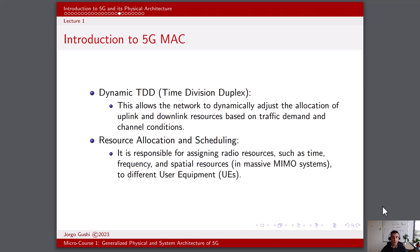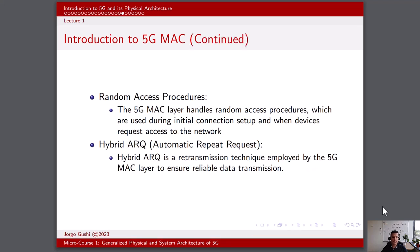5G MAC also works on resource allocation and scheduling, assigning radio resources such as time, frequency, and spatial resources in massive MIMO systems to different user equipments or UEs. The 5G MAC layer is also responsible for random access procedures, which are used during initial contention setup and when devices request access to the network. Furthermore, hybrid ARQ, or automatic repeat request, is a retransmission technique employed by the 5G MAC layer to ensure reliable data transmission.